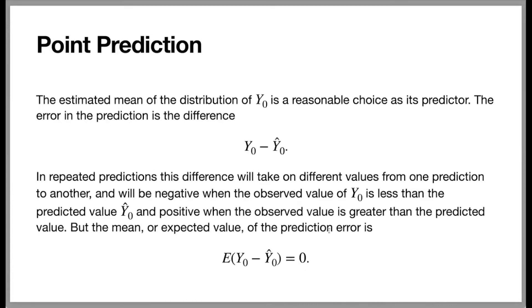The estimated mean of the distribution of y sub 0 is a reasonable choice as its predictor. The error in the prediction is given by the difference y sub 0 minus y sub 0 hat. In repeated predictions, this difference will take on different values — it will be negative when the observed value of y sub 0 is less than the predicted value y hat sub 0, and positive when the observed value is greater than the predicted value. But the expected value of the prediction error is 0, which is why the estimated mean is a reasonable choice as the predictor of y sub 0.